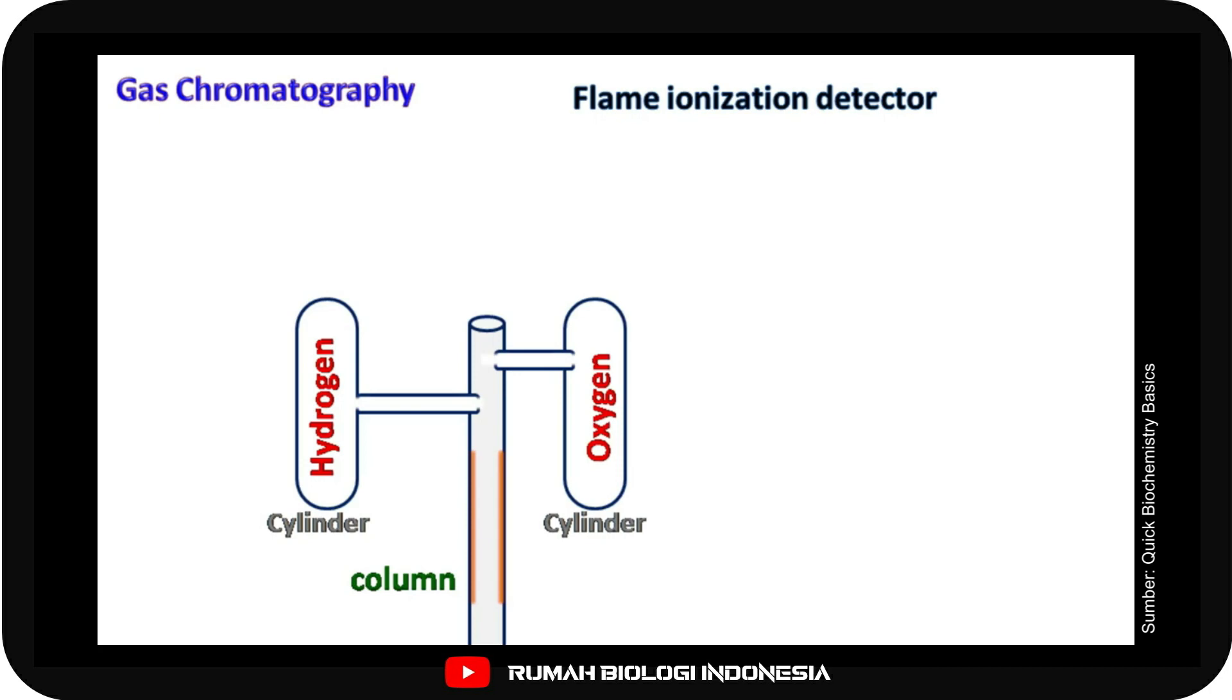The flame ionization detector has three inlets. One for the carrier gas which comes from the column and the other two for hydrogen and oxygen.